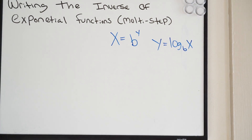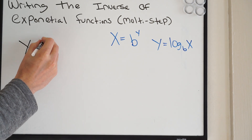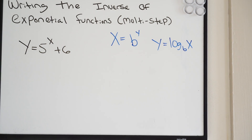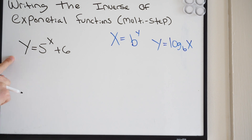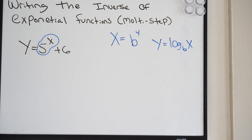In this video we're going to be talking about multi-step, so let's get into the first problem. We have y equals 5 to the x plus 6. You're going to go through that same process, however, when you're dealing with multi-step you always want to try to isolate the exponential first. And vice versa, if we're dealing with a log and you want to get the inverse, you isolate the log.